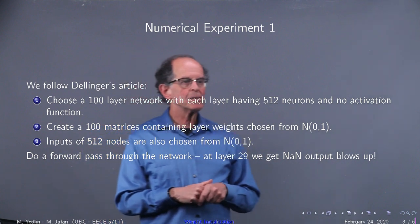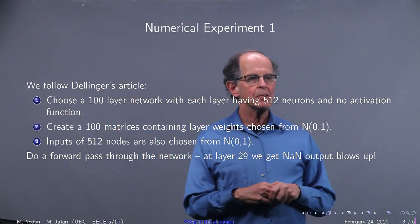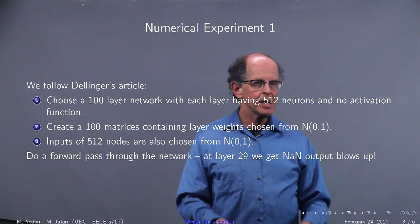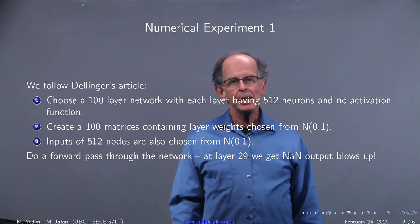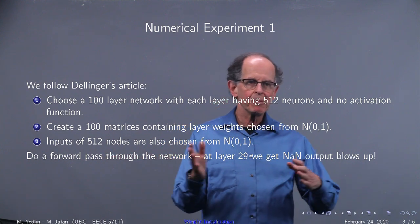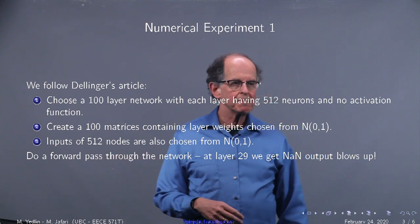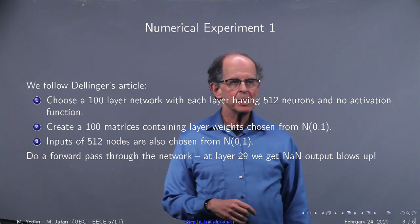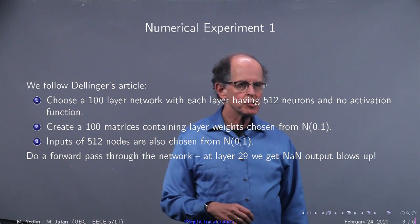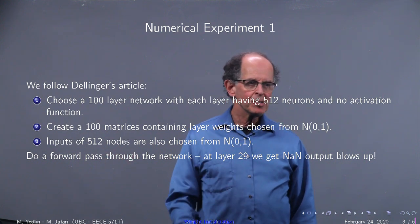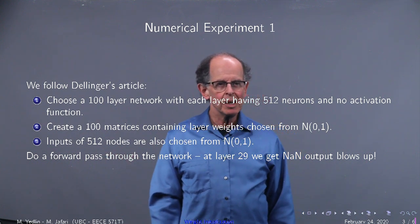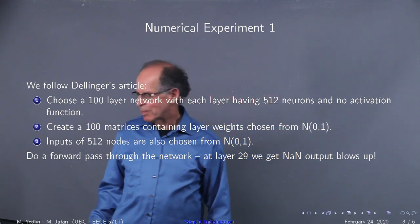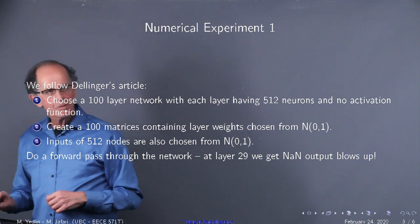Let's follow Dillinger's article. It's fairly straightforward. You take a 100-layer network with each layer having 512 neurons, and you create 100 random matrices to map through the network. All the elements are chosen from N(0,1), both for the matrices and the nodes. And you do a forward pass and guess what? At layer 29, it all blows up. It's too big. So we have to fix it. So that's the first experiment.